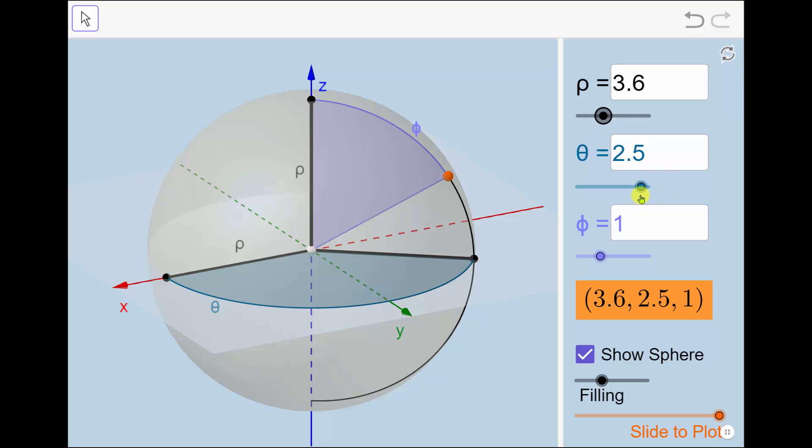Theta is the angle counterclockwise from the pole or positive x-axis. As we change theta, we can see how it affects the point.